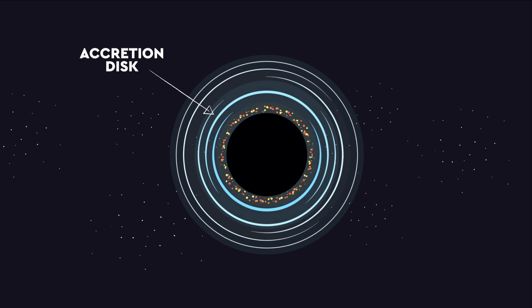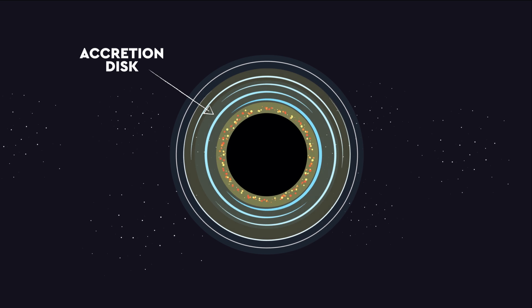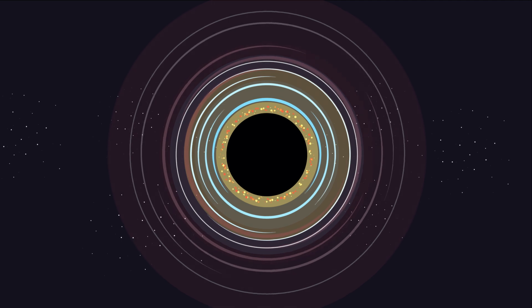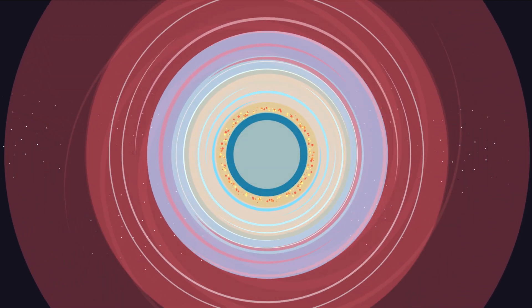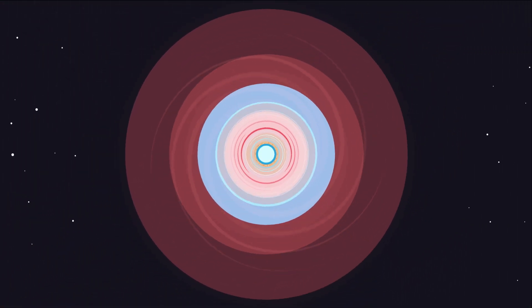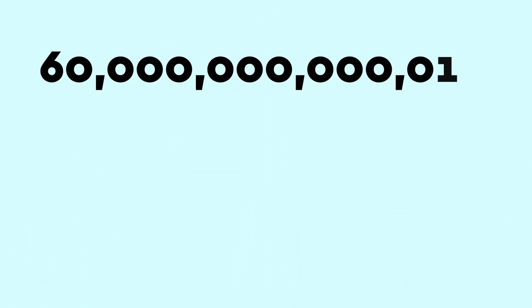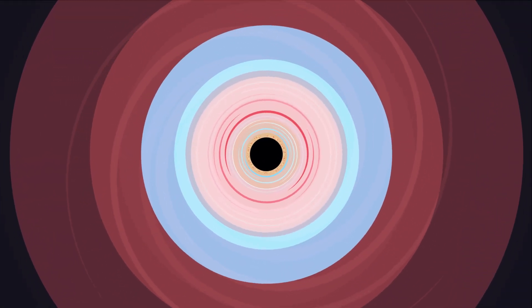But because of the incredible friction generated by the unfathomable speeds, those bits of material are heated to billions of degrees, releasing radiation and glowing incredibly bright. This process can lead to something known as a quasar. For example, a supermassive black hole with a mass 2 billion times that of our sun led to a quasar which gave off an extreme amount of light. How extreme? 60 trillion times more light than our sun. So while the black hole itself is completely devoid of light, their existence can help produce some of the brightest objects in the entire universe.